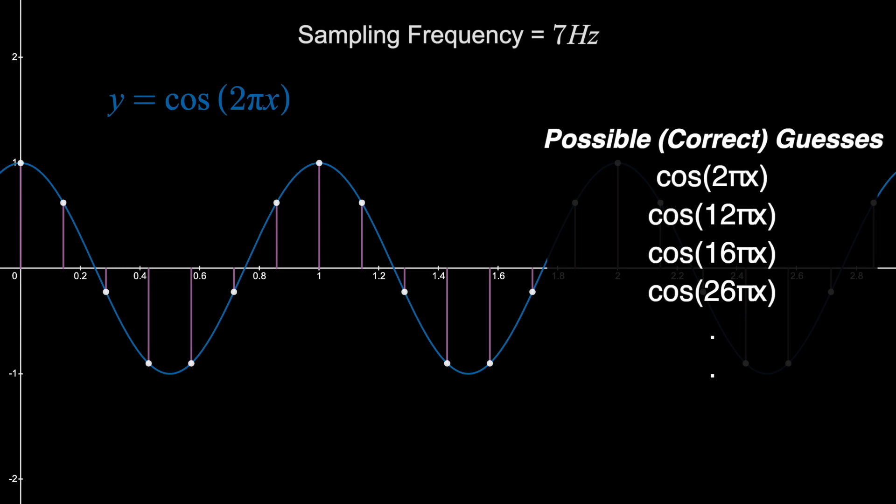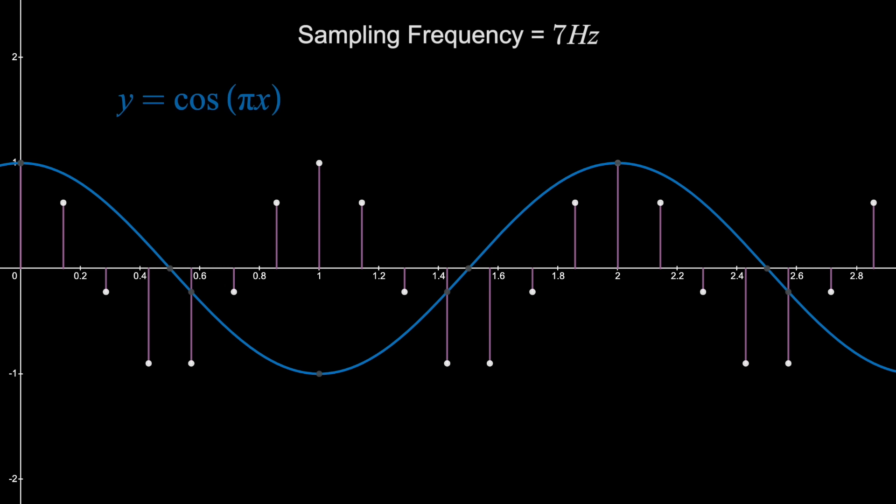However, notice that 1 Hz, the actual original signal, is the lowest frequency that you could guess. If we go down to anything else, like 0.5 Hz, this clearly will not go through all the samples, and nothing below 1 Hz will.